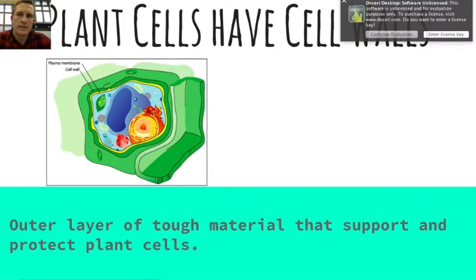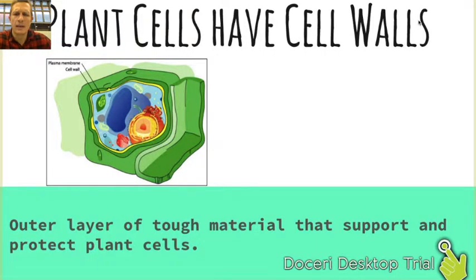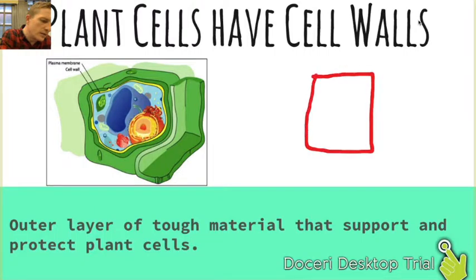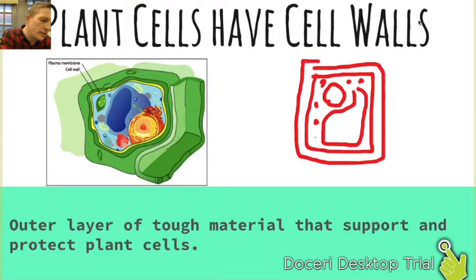Plants have an extra layer of protection surrounding their cell membrane called the cell wall. It's a tough, indigestible cellulose material that surrounds the plant cell. If we draw a plant cell — you know it's a plant cell because it's square — with a nucleus, a big central vacuole, and some chloroplasts, the cell wall would be a second layer around it surrounding the cell membrane.